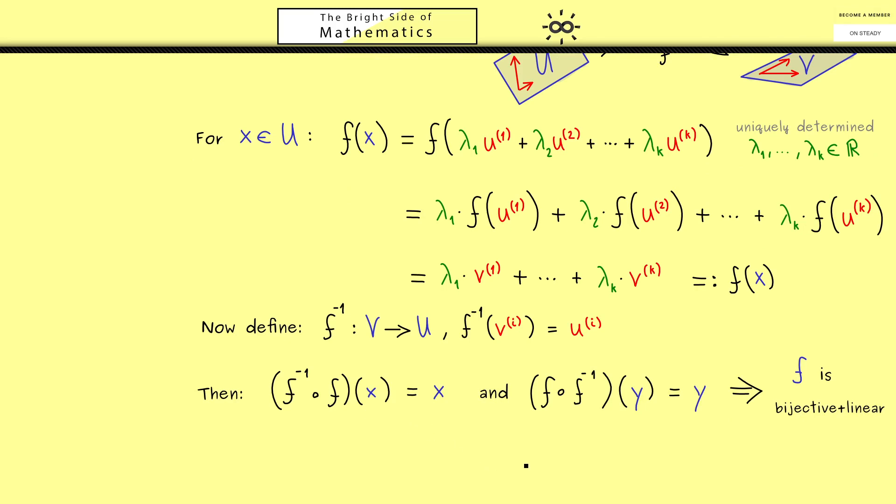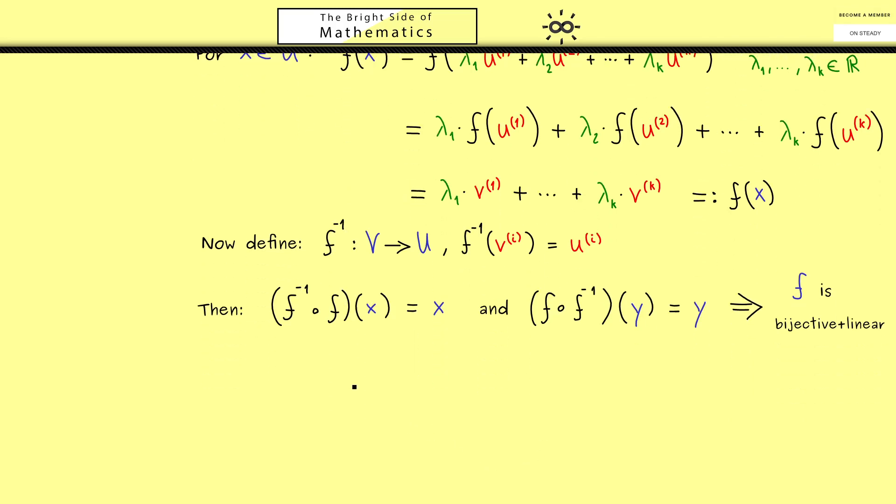Hence the first implication from left to right is proven. Now for the implication from right to left we have to assume that we already have such a bijective linear map. And then we want to show that the dimensions of U and V coincide.